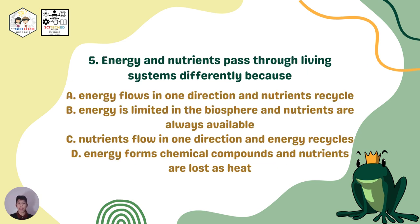Question number five: Energy and nutrients pass through living systems differently because: A. Energy flows in one direction and nutrients recycle. B. Energy is limited in the biosphere and nutrients are always available. C. Nutrients flow in one direction and energy recycles. D. Energy forms chemical compounds and nutrients are lost as heat.